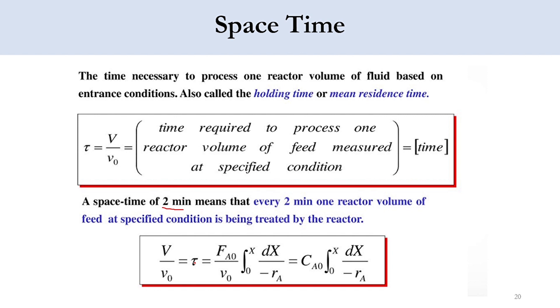Now for the PFR, V equals FA0 integral 0 to x of dx over minus RA, over V0. So this term will become CA0 integral 0 to x of dx over minus RA, that equals tau for the PFR system, and obviously in similar lines it will be for the CSTR system.